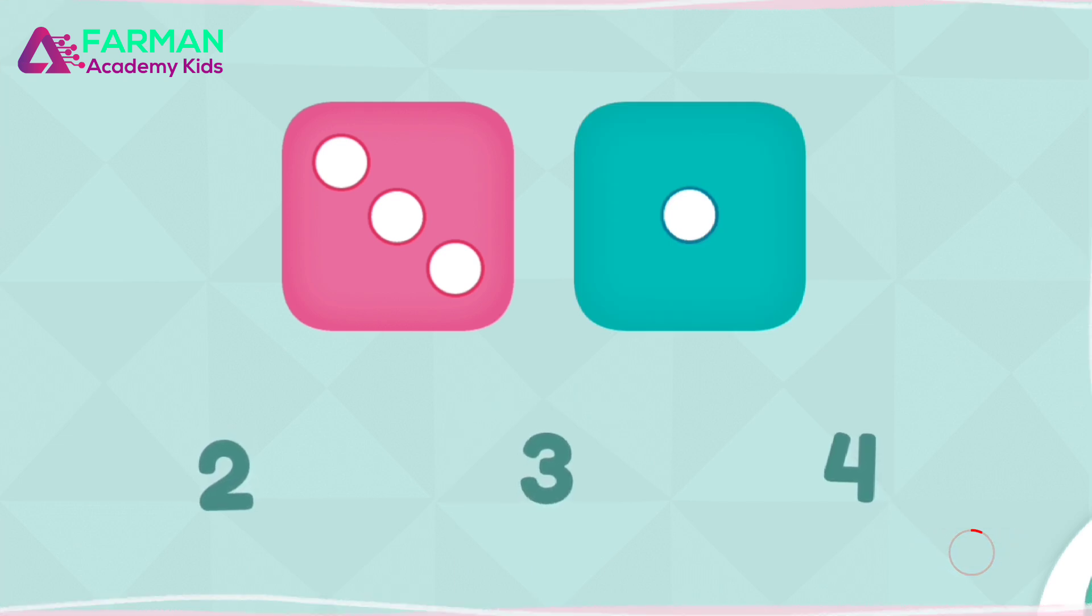How many dots are on both dice all together? Four. Good work! There are four dots all together. We added a lot of numbers together.